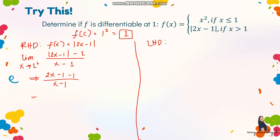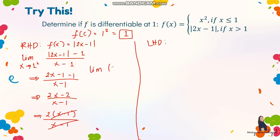Simplifying: 2x minus 2 over x minus 1. Factoring out 2 gives 2(x minus 1) all over (x minus 1). Cancelling gives the limit of 2 as x approaches 1 from the right. Since this is a constant, the limit is 2. So the right hand derivative is 2.